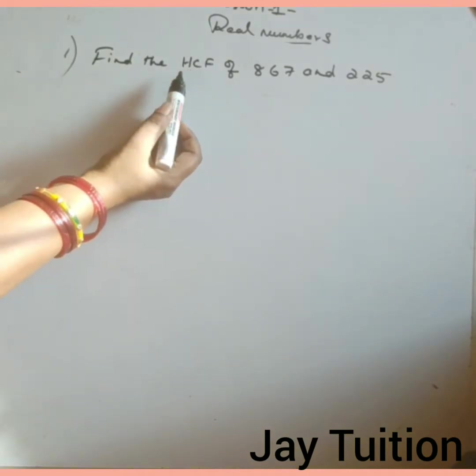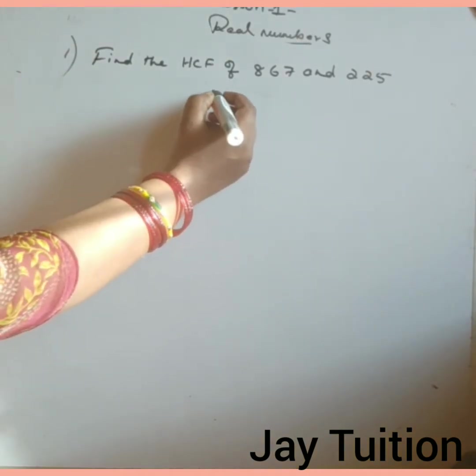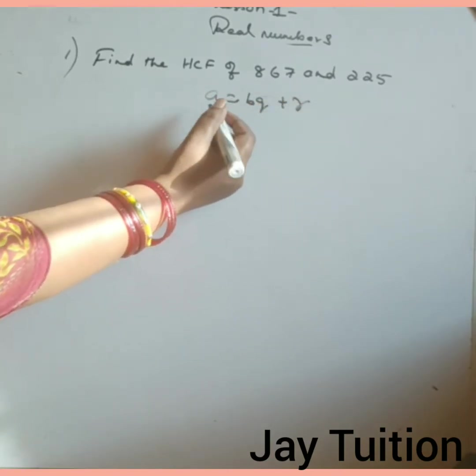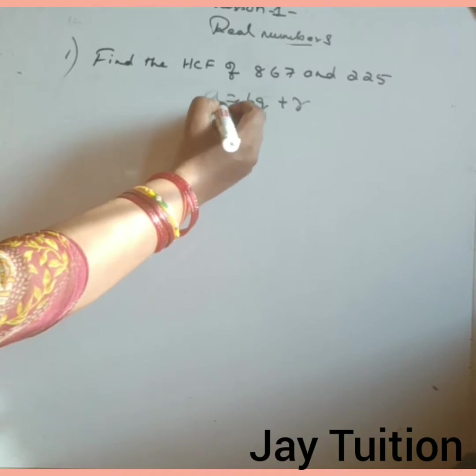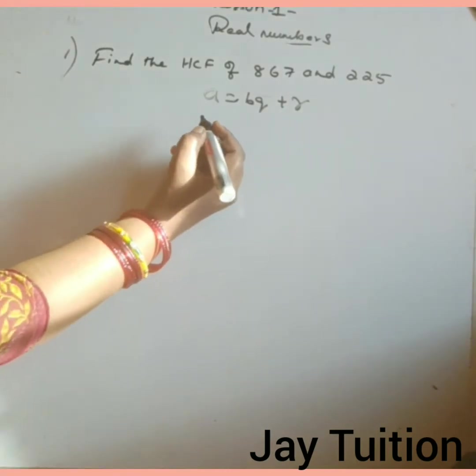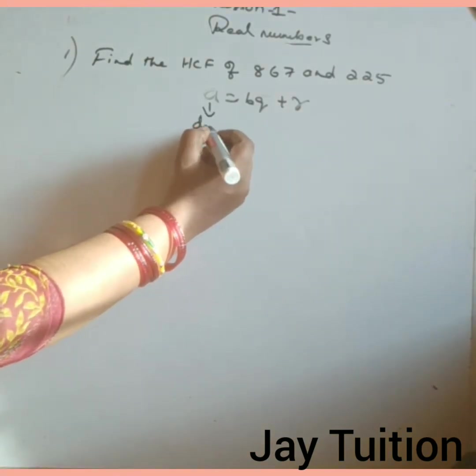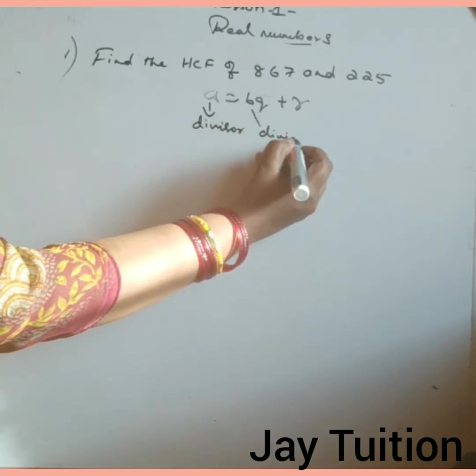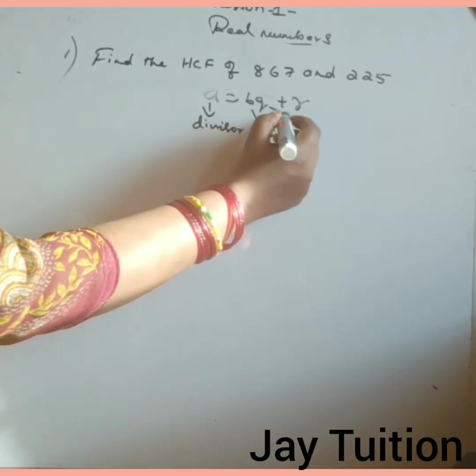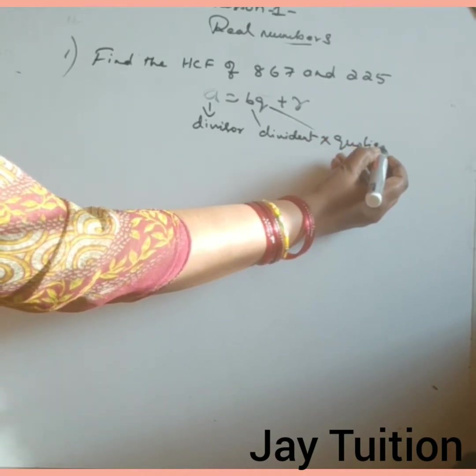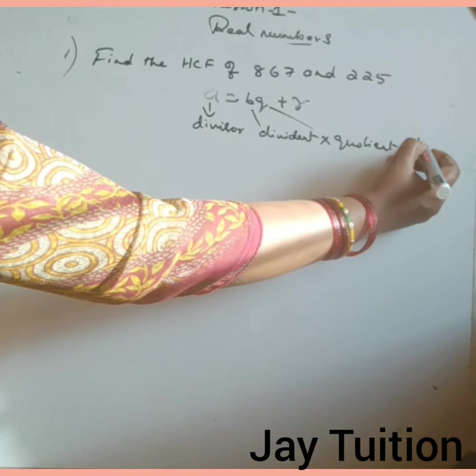Before going to the main sum, we have to know A equals to BQ plus R. If you know this, then only you can solve the problem. First, A is divisor, B is dividend, Q is quotient, plus R is remainder.